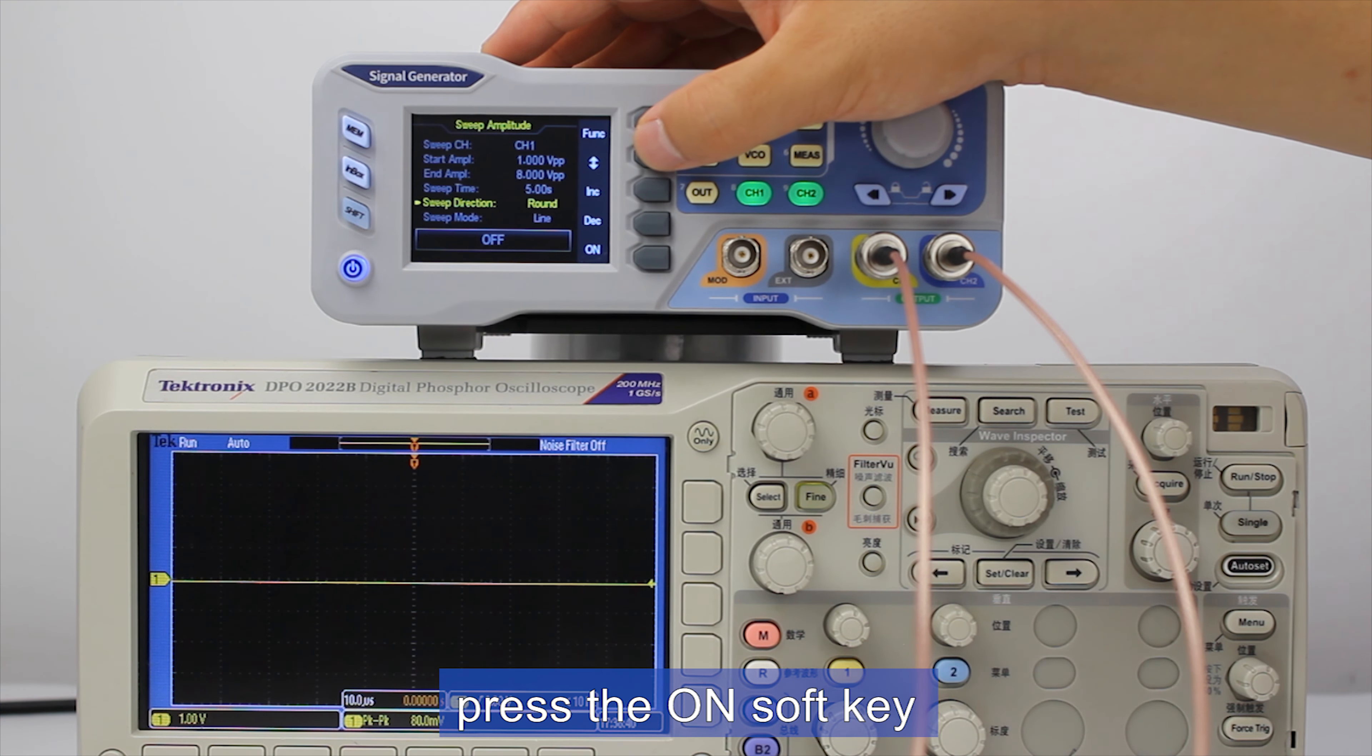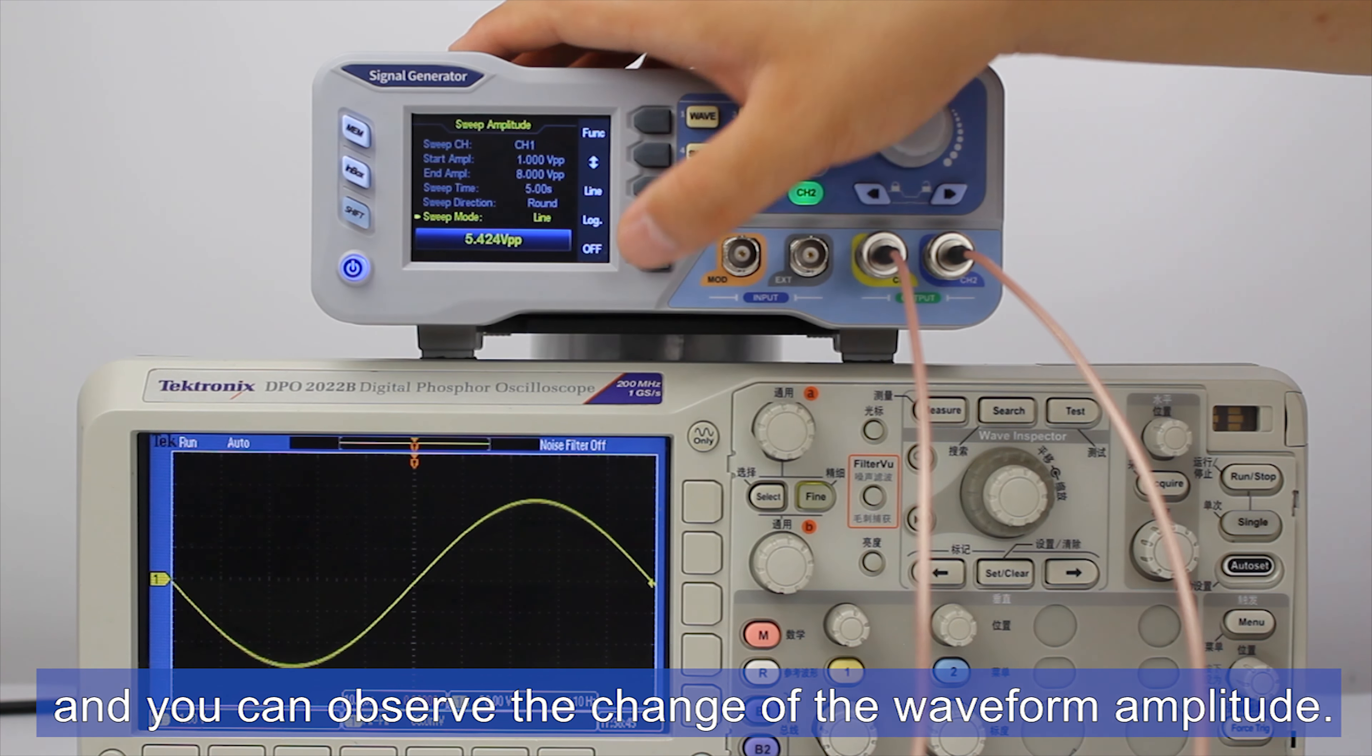Press the ON soft key. The instrument starts sweeping and you can observe the change of the waveform amplitude.